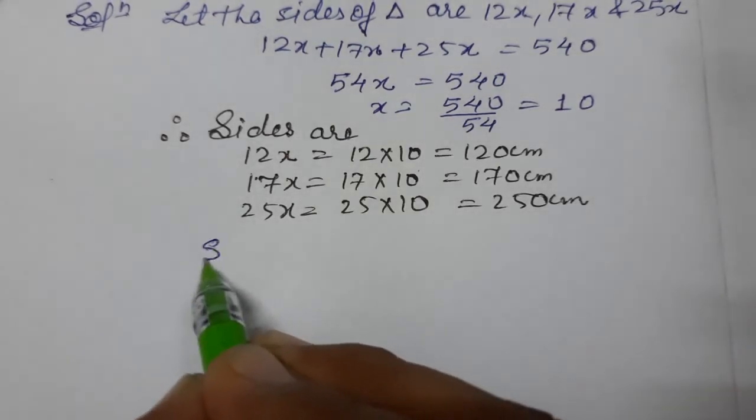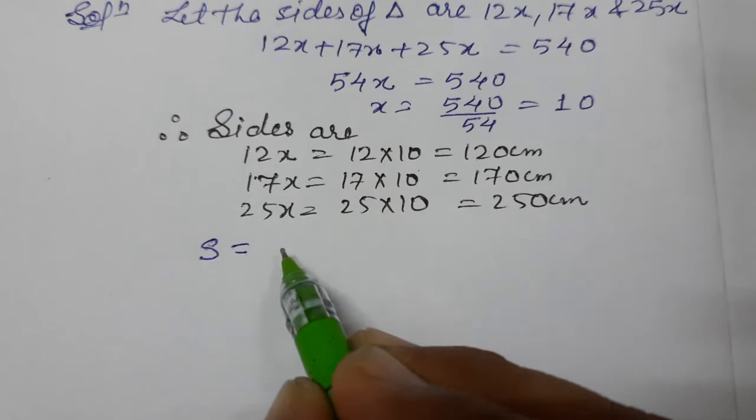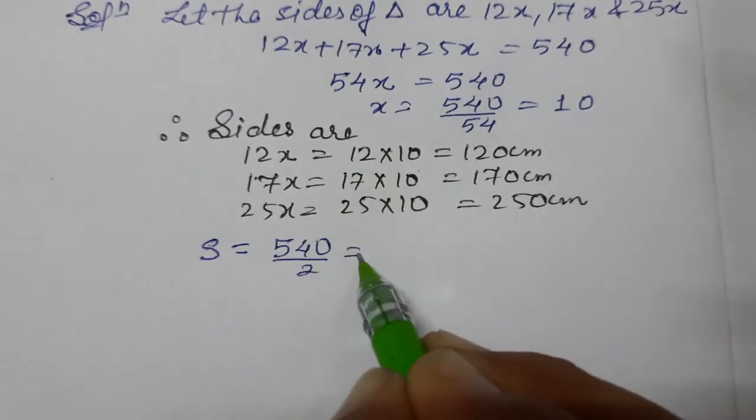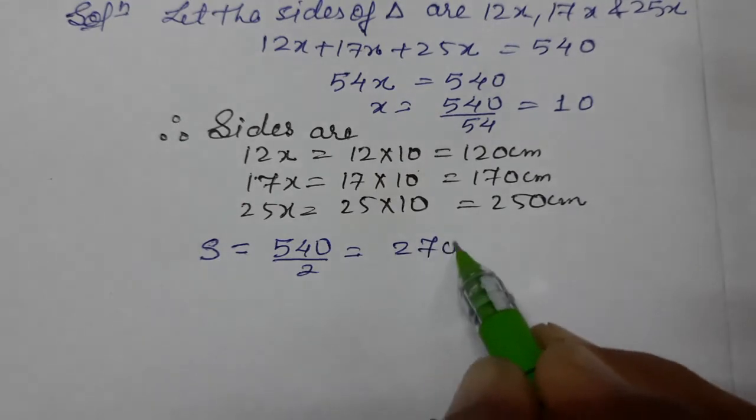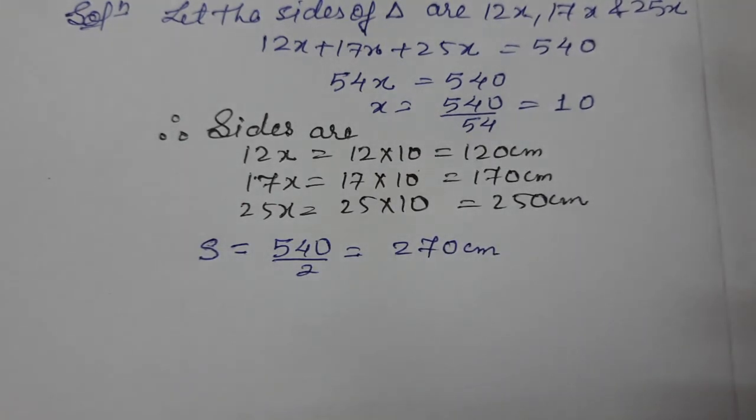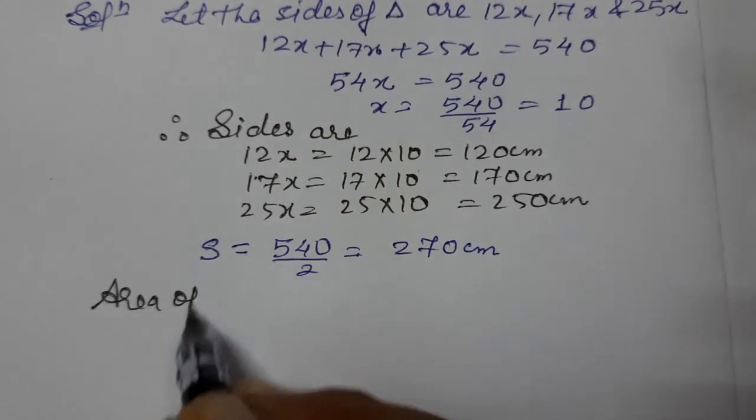So now let's find s. s equals to semi-perimeter, perimeter divided by 2. Perimeter is given to us, 540. 540 by 2 equals to 270 centimeter. Now we know the area formula, area of triangle when three of its sides are given to us, Heron's formula.